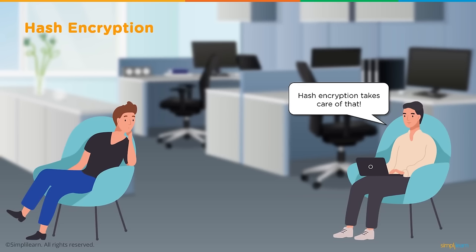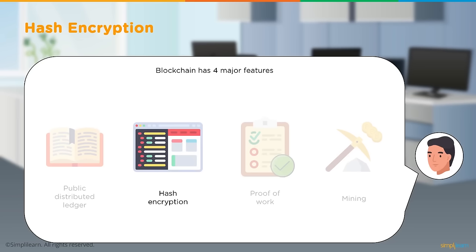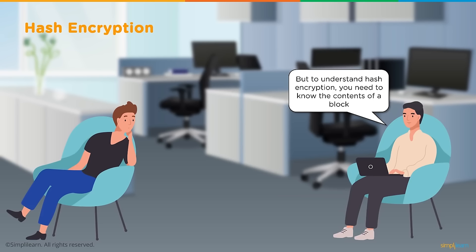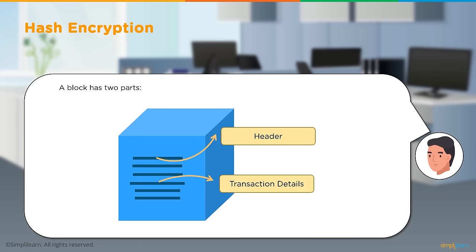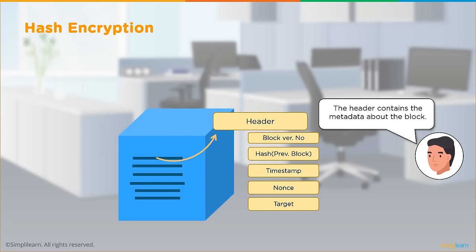But what about security — how is privacy maintained if everything is so public? This is where hashing encryption comes in. To understand it, we need to understand the contents of a block. A block in blockchain is a container holding aggregated transactions. It has two parts: a header and the transaction details. The header contains the block version number, hash of the previous block, current timestamp, nonce, and target value.